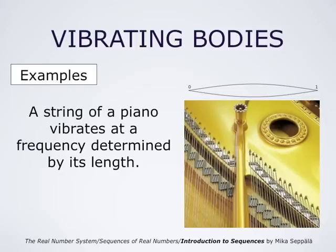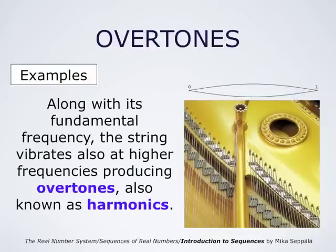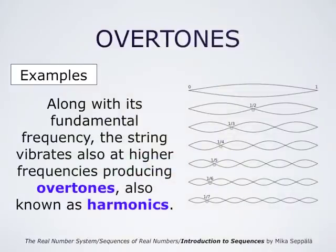A string of a piano vibrates at the frequency determined by its length. This frequency is called the fundamental frequency of the string, or the fundamental tone of the string. But together with its fundamental frequency, the string also vibrates at higher frequencies, producing overtones — these are also known as harmonics.